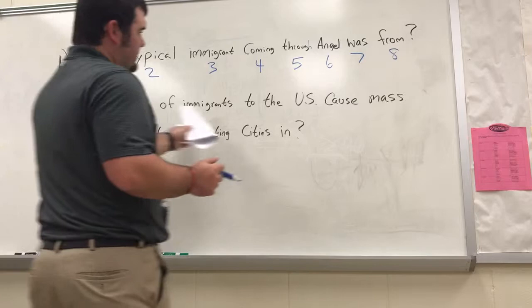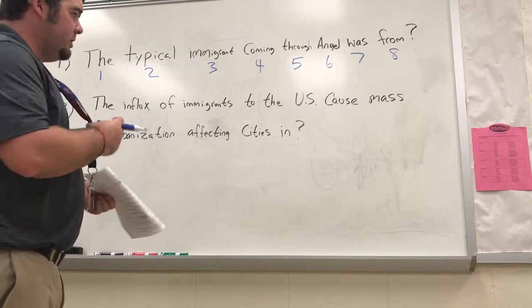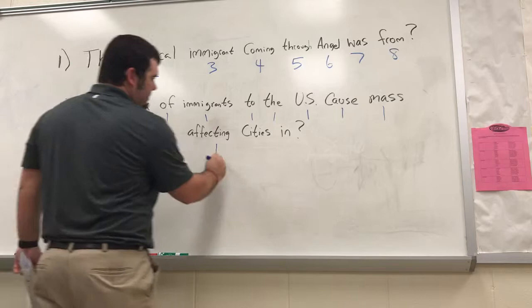This example sentence says: 'The influx of immigrants to the United States caused mass urbanization, affecting cities in what area?' A good way to use sentence segmentation is to literally break it up word by word. I'll show you how to do that quickly, because when we do the history EOC, the questions are pretty complicated.